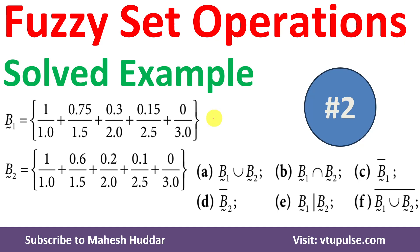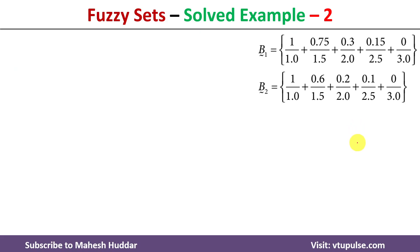Welcome back. In this video I will discuss how to perform union, intersection, complement, and difference given two fuzzy sets, with the help of a simple solved example. We have been given two fuzzy sets B1 and B2, with five elements in each. The degree of membership for every element is given — for example, 1.0 is an element in fuzzy set B1 with a degree of membership of 1; 1.5 is another element with a degree of membership of 0.75, and so on.